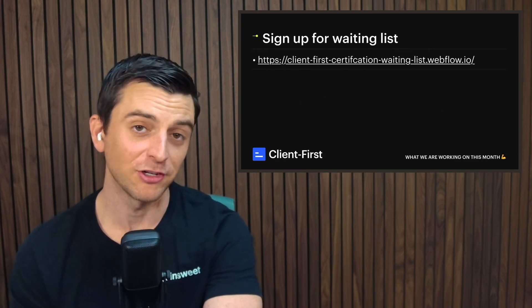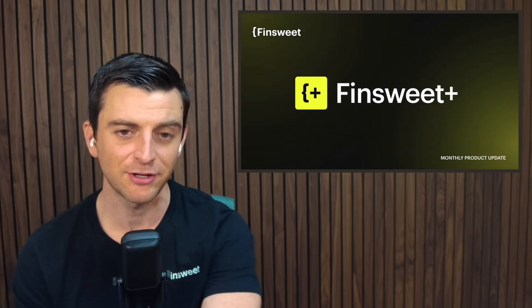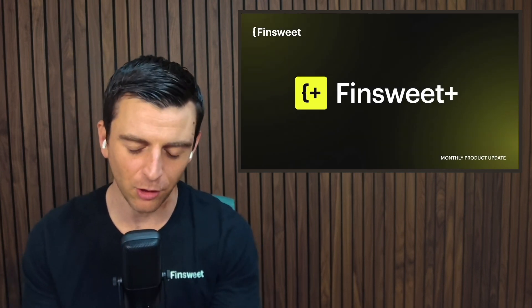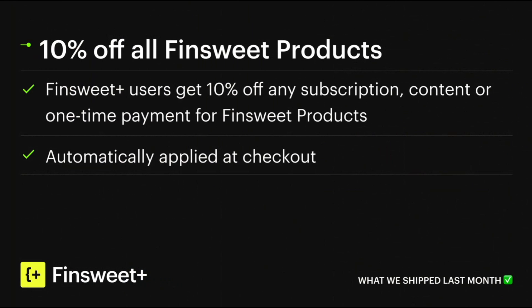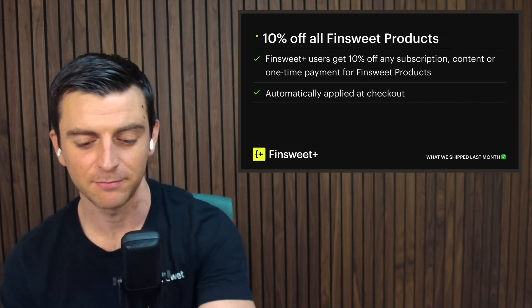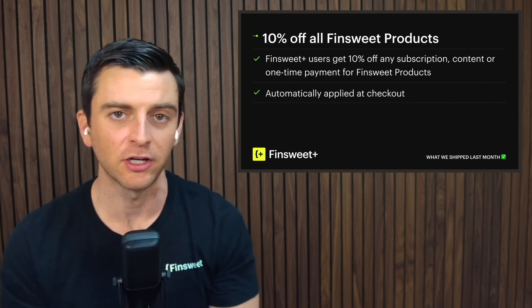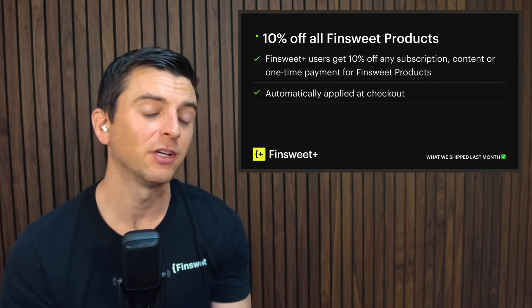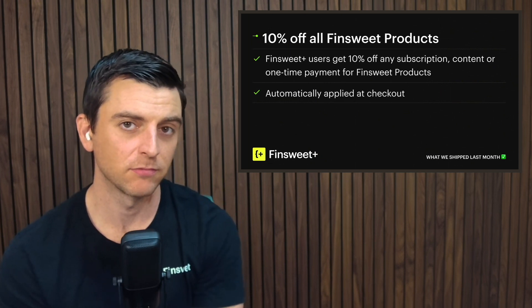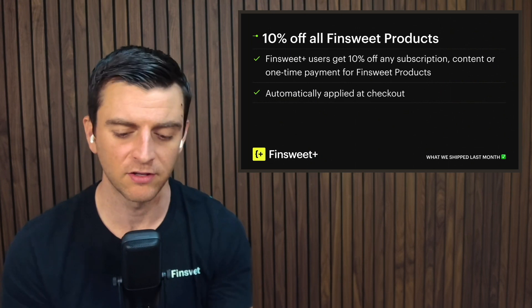Moving on to Fin Suite Plus — this is a big set of information. I think we've really found what a lot of people have been asking for: 10% off all Fin Suite products across the whole board. If you are a Fin Suite Plus user, you will get an automatic 10% discount applied at checkout on any subscription, content, or one-time payment for Fin Suite products. There are no coupon codes; we know who's a Fin Suite Plus user and on every purchase you get that 10% off. This is not going to expire — it's a forever thing and can be bundled with other discounts.